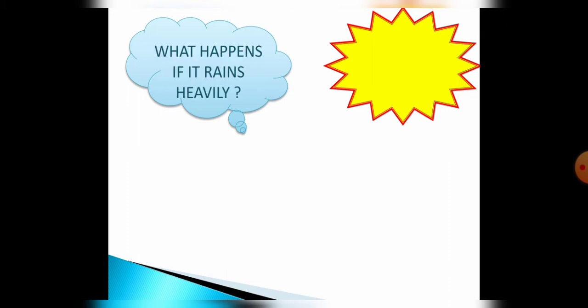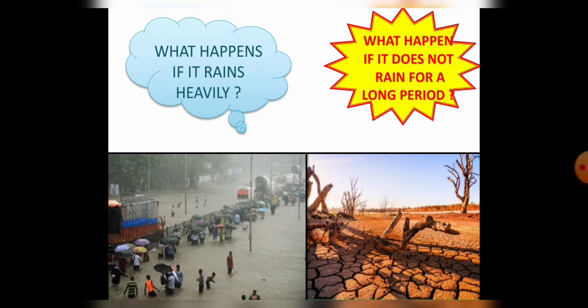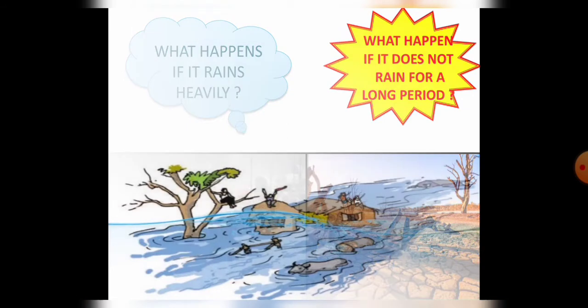Good morning students, I hope you all are prepared for the reopening of your schools. This is your science teacher and today I am back with two important topics. In the previous class you studied about water and the water cycle. Now, what happens if it rains heavily, and what happens if it does not rain for a longer period of time? We will talk about these two conditions one by one.